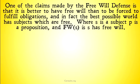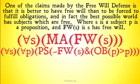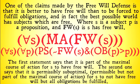One of the claims made by the free will defense is that it is better to have free will than to be forced to fulfill obligations. In fact, the best possible world has subjects which are free. Where S is a subject, P is a proposition, and FWS means S has free will, the first statement says that it is part of the maximal course of action for S to have free will — for all S, it's part of the maximal course of action that S has free will. This is kind of the maximal course of action for God in deciding what world should be created.